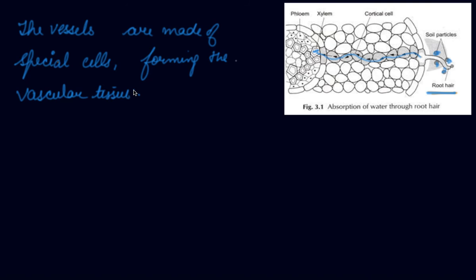The vascular tissue for the transport of water and nutrients in the plant is called xylem. The xylem forms a continuous network of channels that connect roots to the leaves through the stem and branches that transports water to the entire plant.